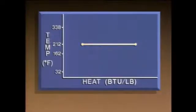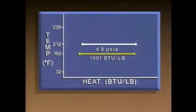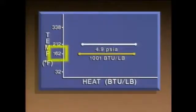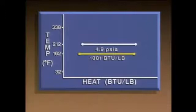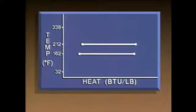Now let's take an example in which the pressure is less than atmospheric. At 4.9 PSIA, a pound of water boils at 162 degrees Fahrenheit, and the latent heat of vaporization is around 1,001 BTUs per pound. So when the pressure is reduced, water boils at a lower temperature, but it takes more heat to boil all the water into steam. At lower temperatures, water molecules move more slowly, making it harder for them to escape as steam.